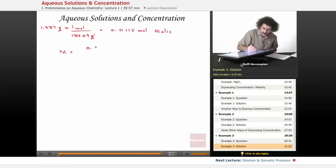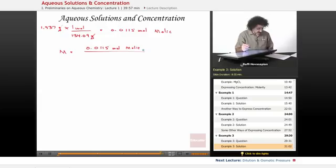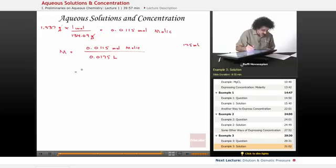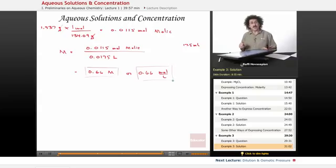I've got 1.537 grams of malic times one mole, and I look it up if the problem doesn't give it to me, 134.09 grams. This is just basic stoichiometry. I get 0.0115 moles of malic acid. We are done. The molarity equals 0.0115 moles of malic acid divided by 17.5 mils, 0.0175 liters. When we do that, we get 0.66 molarity, or 0.66 moles per liter.